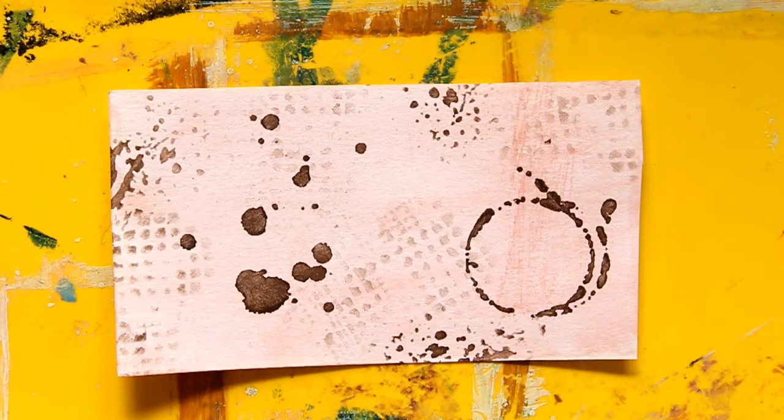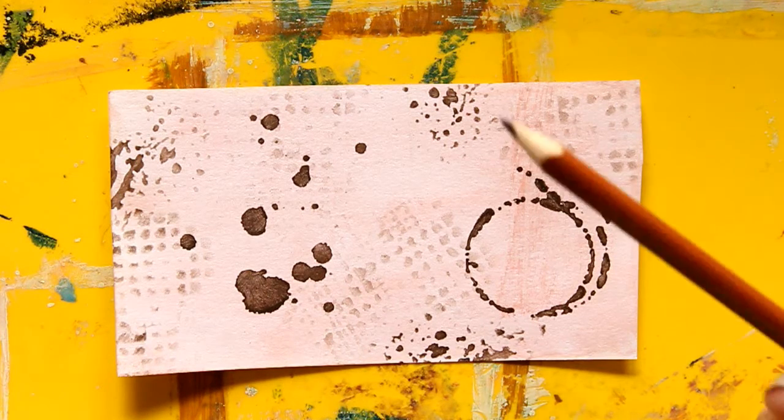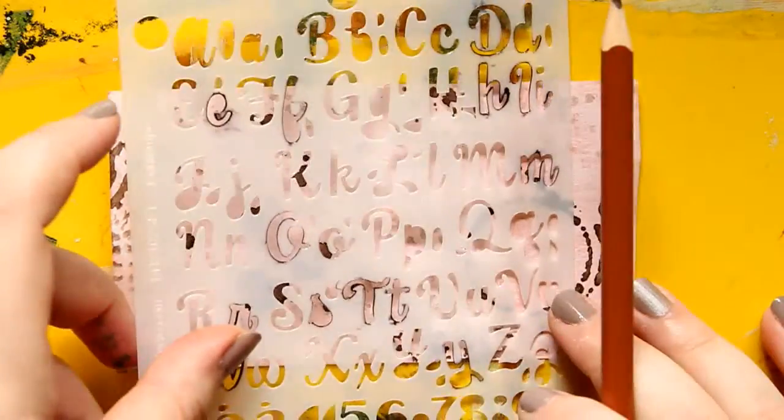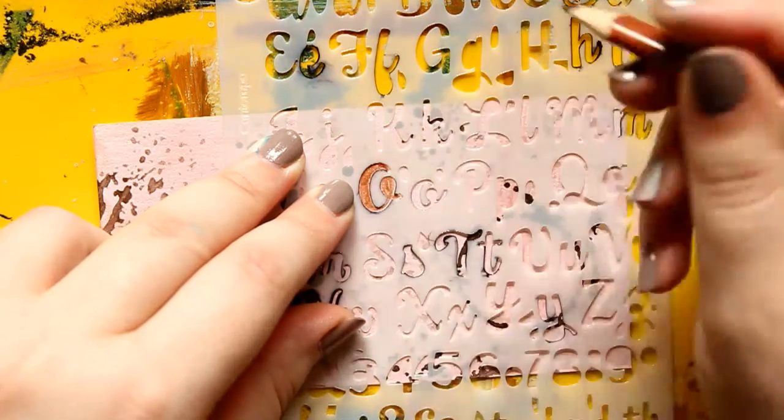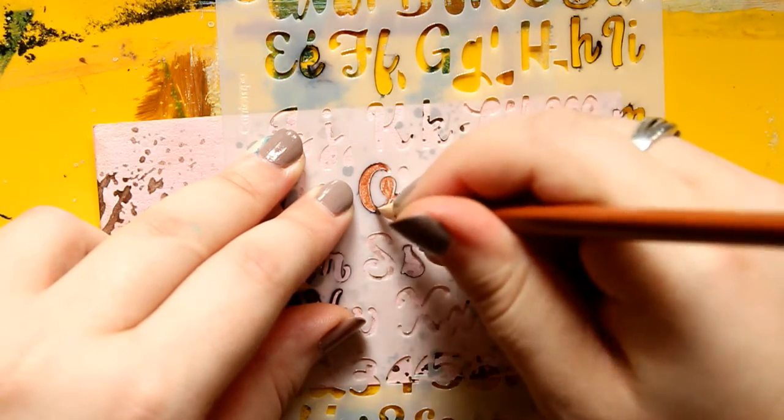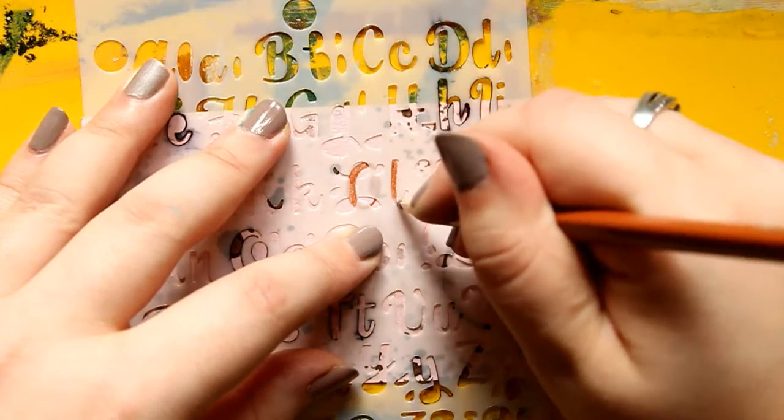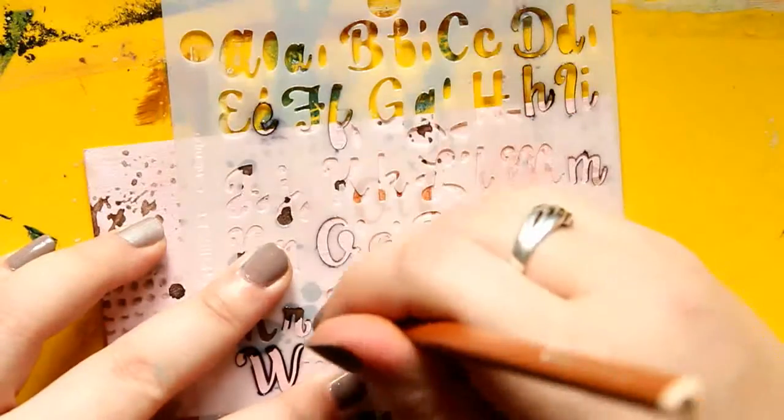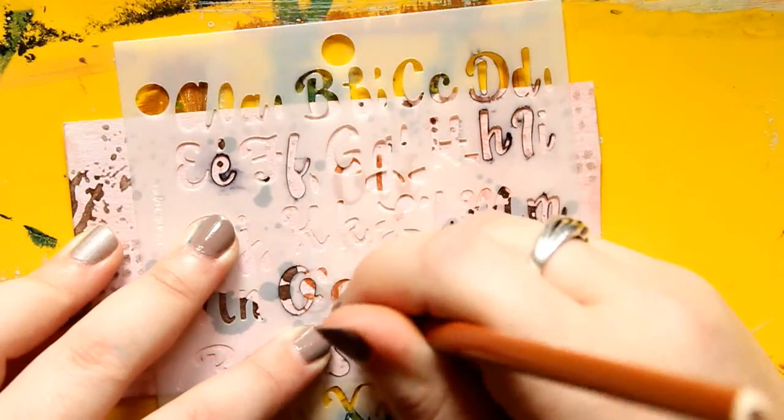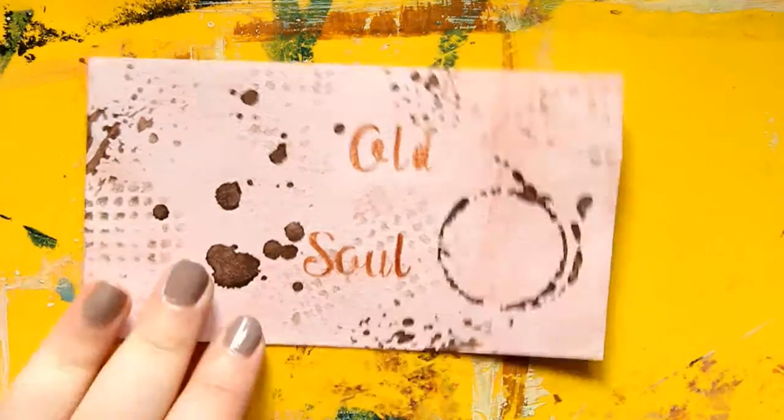If you don't have acrylic paint, you can take colored pencils and trace it like this. It will take you some time but you can do it. See?